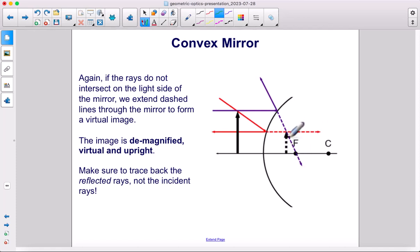You can see this image is demagnified, it's smaller than the object, it is virtual since it's on the dark side of the mirror, and it is upright.